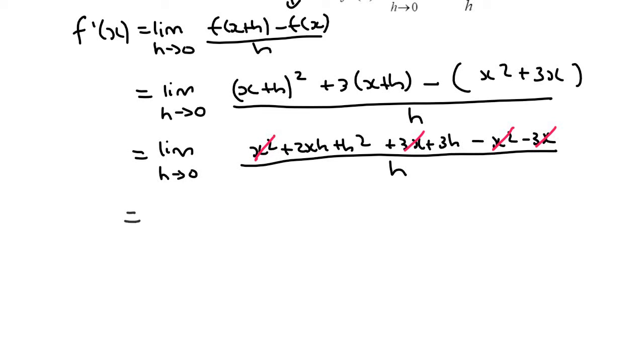We then say equals to lim as h goes to zero, and we write out whatever's left over, which is 2xh plus h squared plus 3h, and that's all over h.